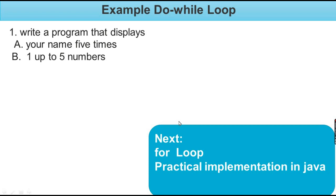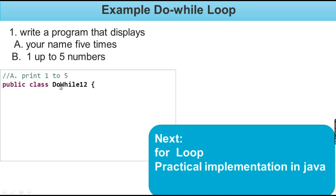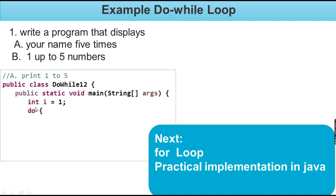For the practical implementation, we will implement a program that displays your name five times. The class is named 'DoWhileOneTwo'. We can see the print line output and the i value is displayed. Even when the condition is false, the statement is executed at least once.